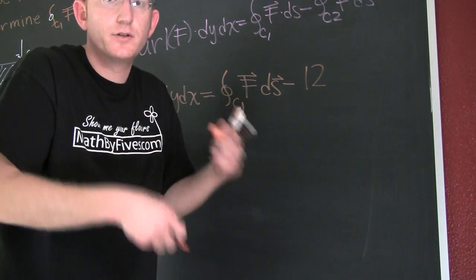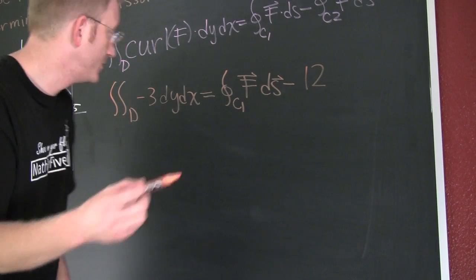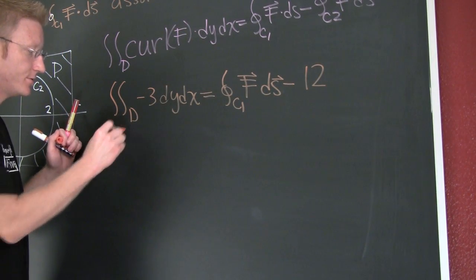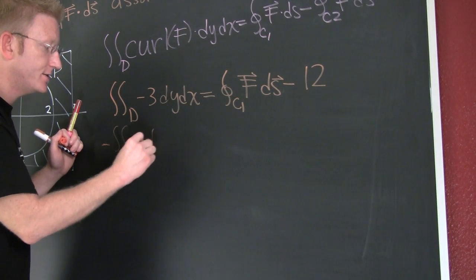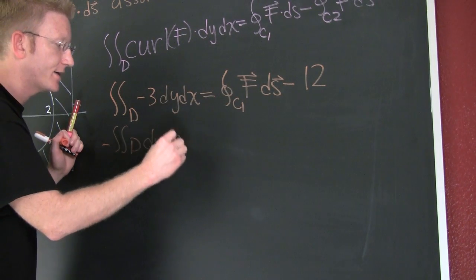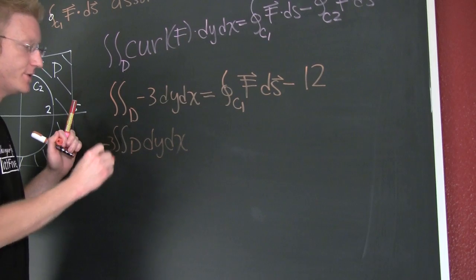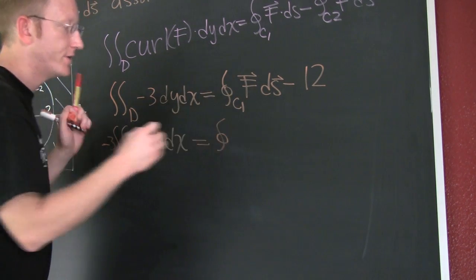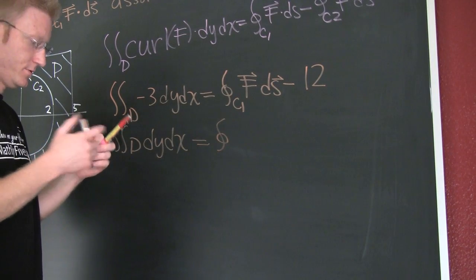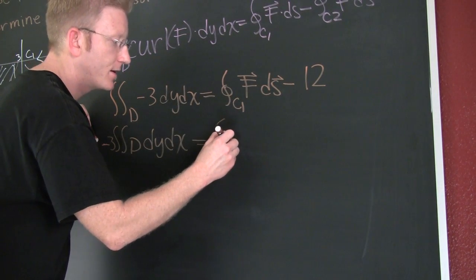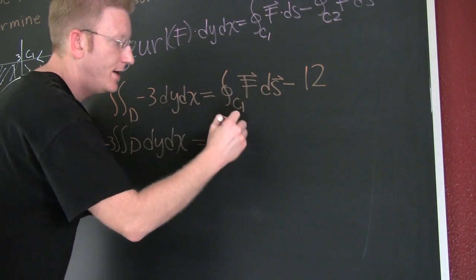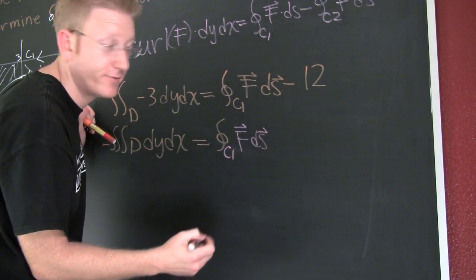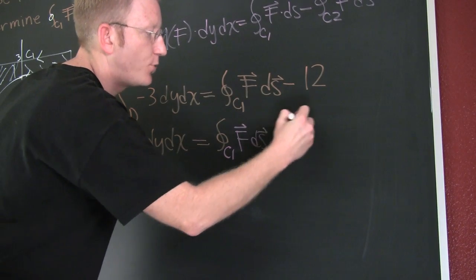Okay, so now let's further go on our integration. If I pass that minus 3 out, then that integral over D DYDX with the minus 3 on the outside is going to be equal to the integral over the closed path C1 FDX. Now remember, this is what we're looking for.